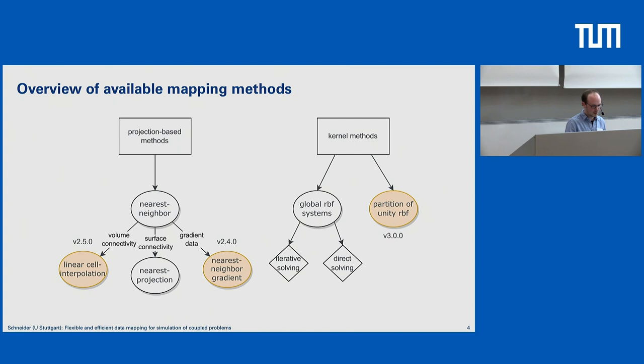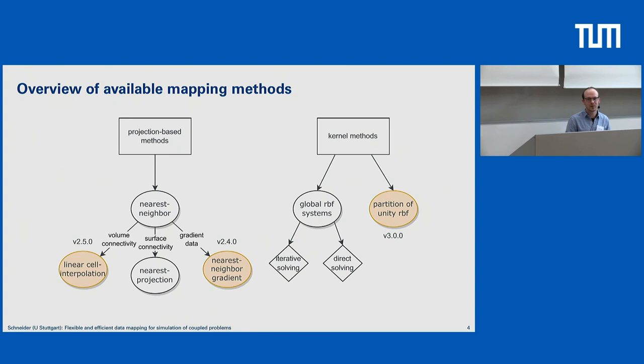If we use projection-based data mapping methods, we are mainly restricted to nearest neighbor mapping, which is the most simple method — it simply assigns the spatially nearest neighbor of our input mesh to our output mesh. Further extensions require additional input from the user. We have a connectivity extension: if we extend our mesh with connectivity between volumetric entities such as tetrahedra or hexahedra, then we can perform a linear cell interpolation.